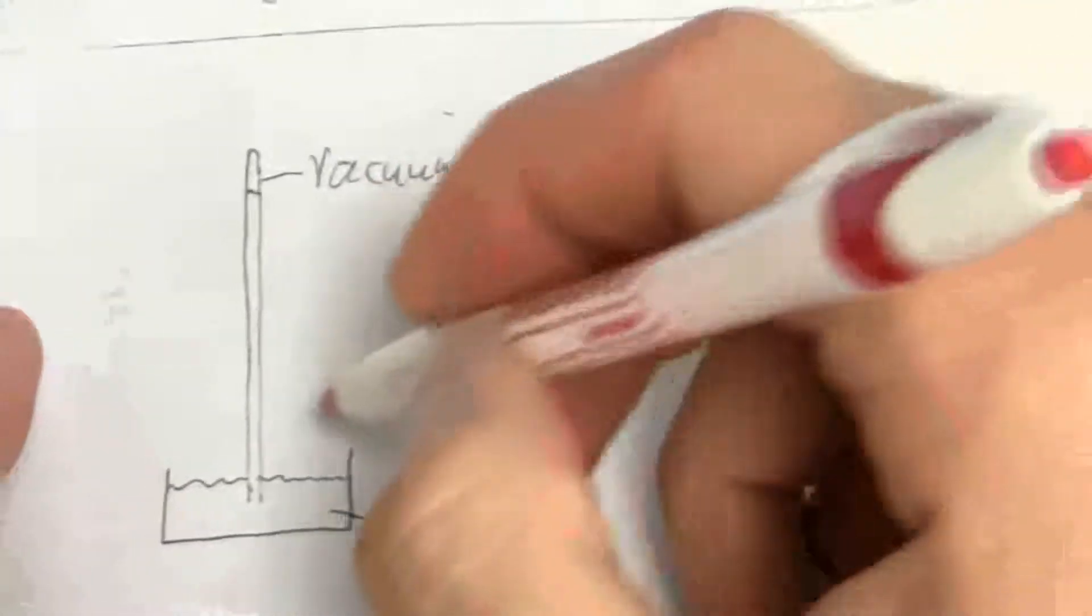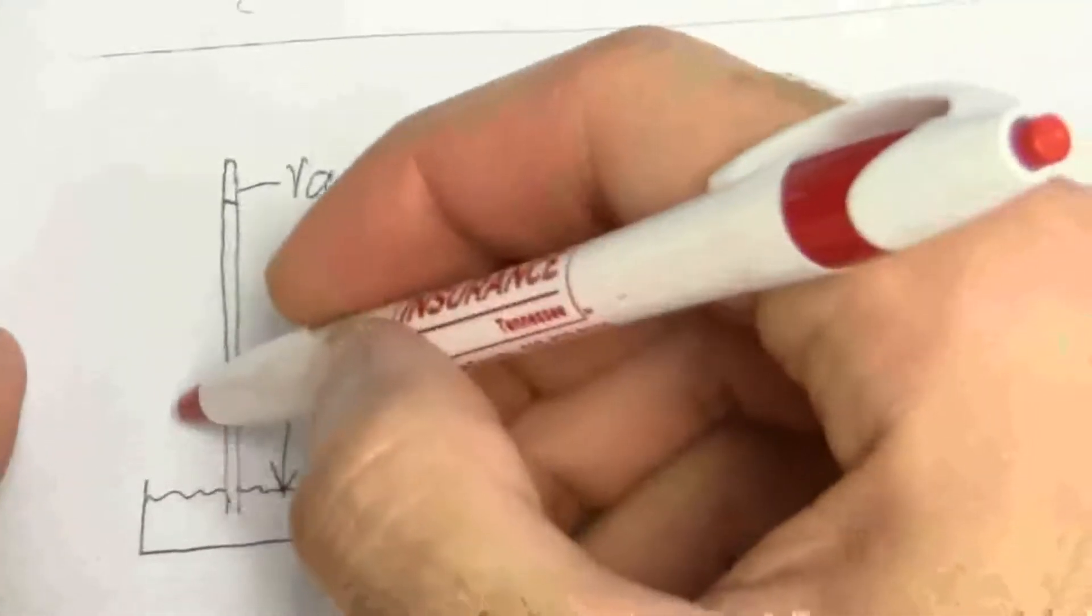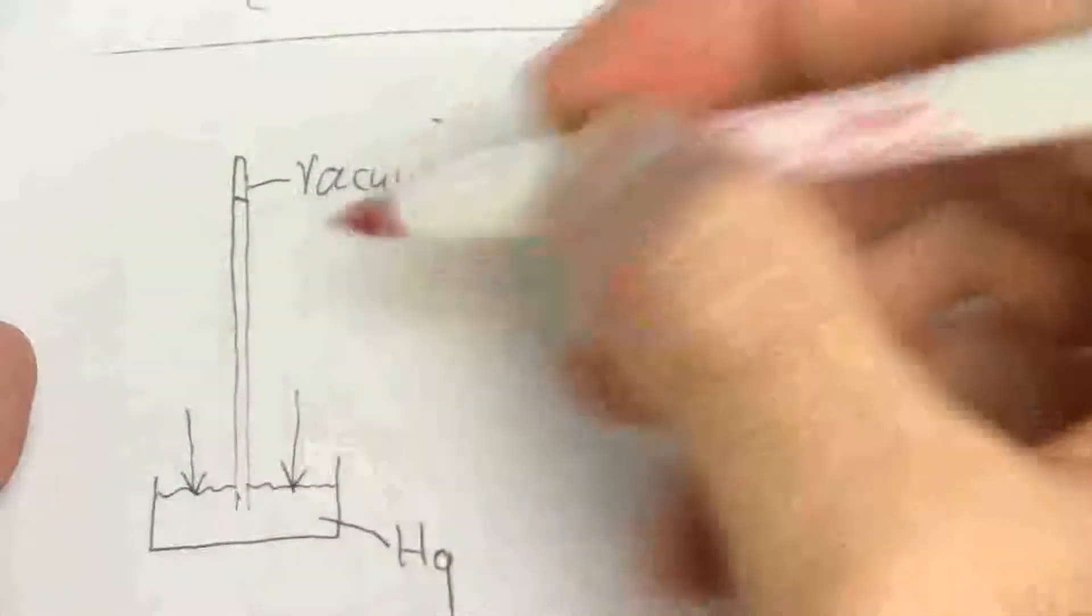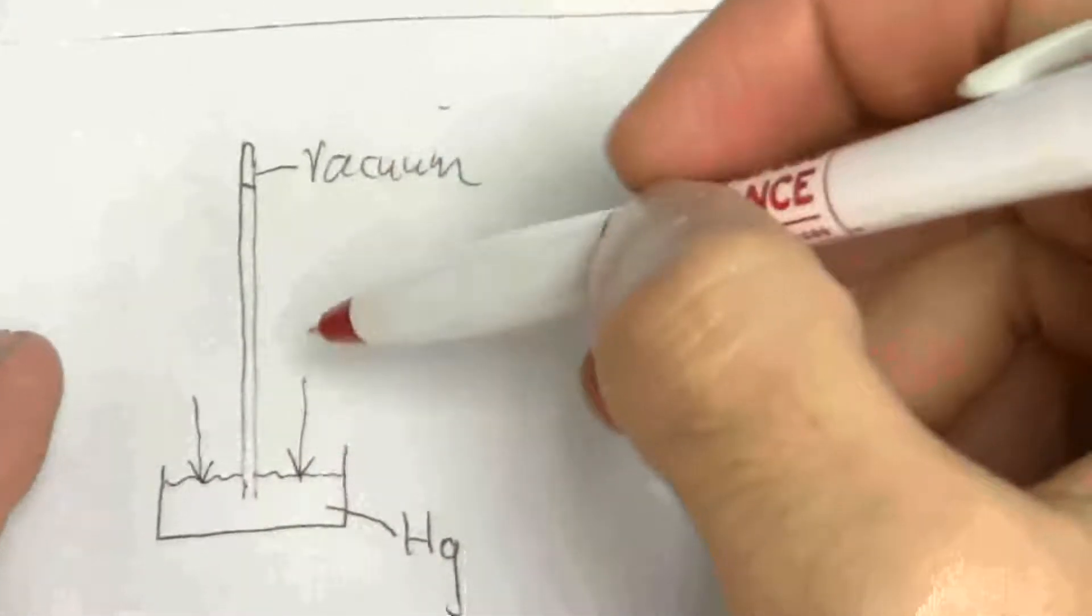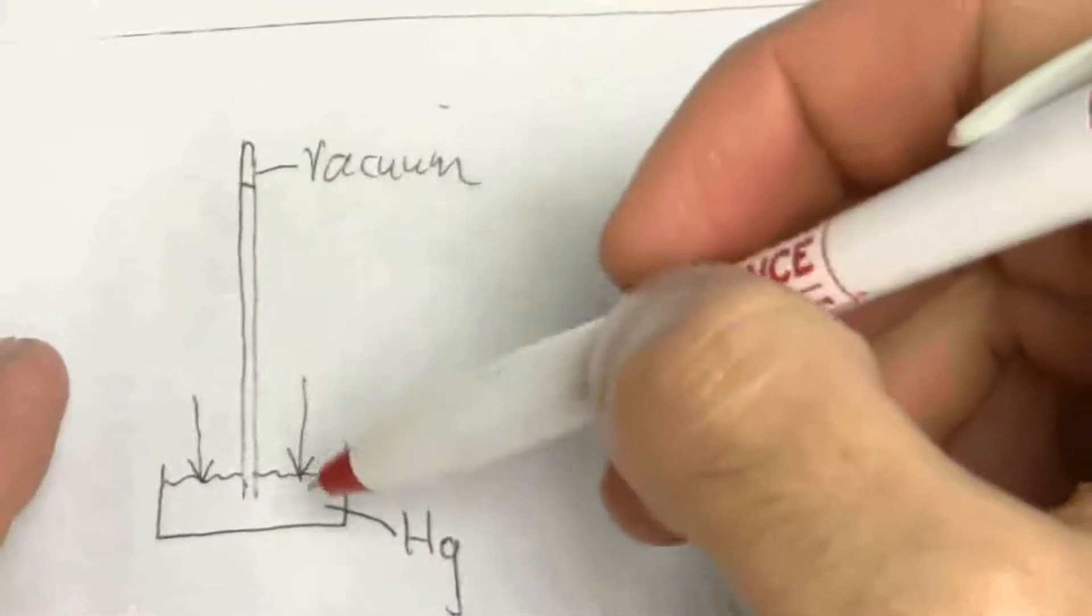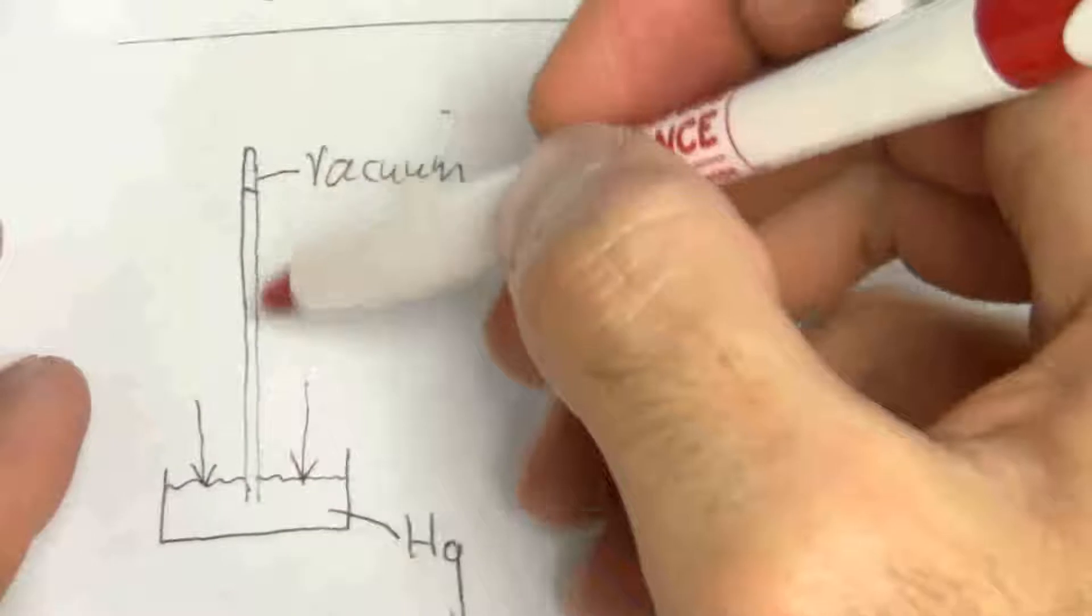So what we have here, the particles of air are pushing down. They exert a certain force on the mercury. And we can measure the force that they're putting based on the weight of mercury in this column.